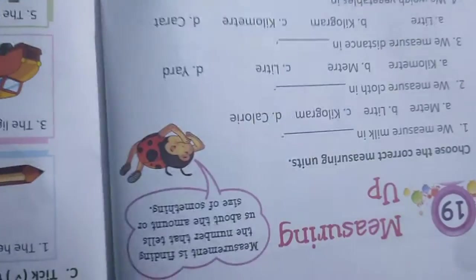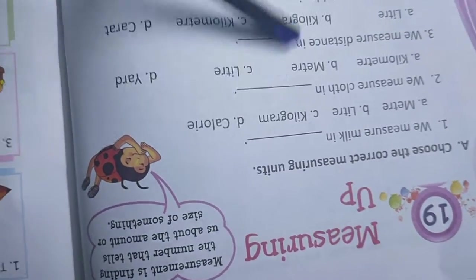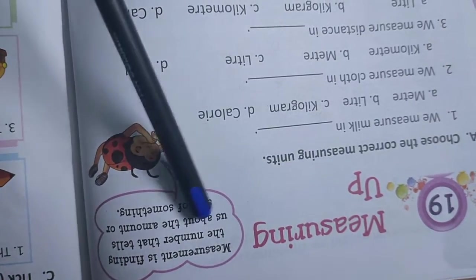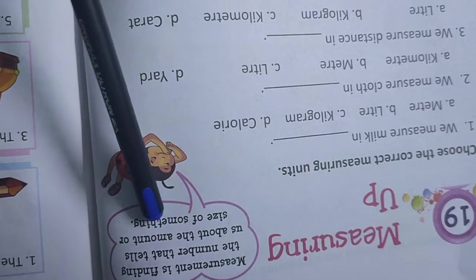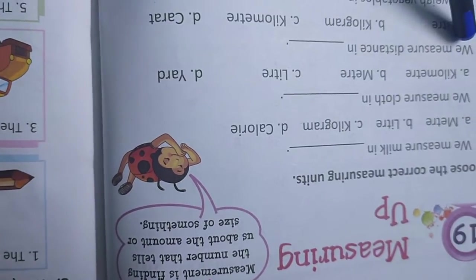Now go to chapter 19, Measuring Up. Already you read it in the math book. Today you can tell the answers. Measurement is finding the numbers that tell us about the amount or size of something. On that day I tell you kilogram, liter, meter.